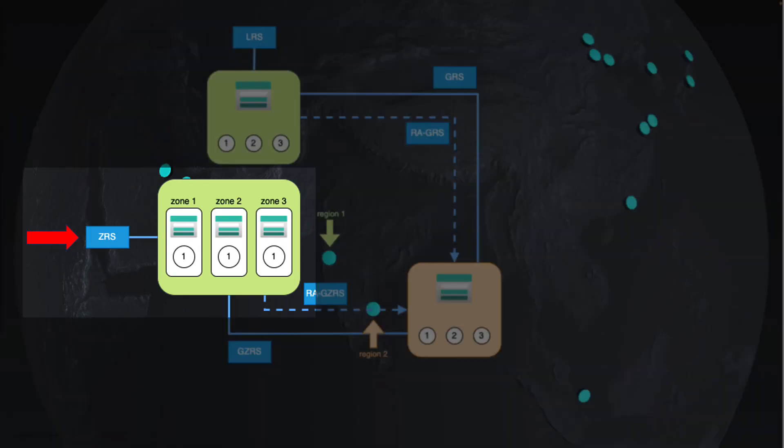In this image, you can see the region consists of three zones: zone 1, zone 2, and zone 3. Even if data is lost in zone 1, it is available in zone 2 and zone 3. It too doesn't have any dependency on the secondary region.